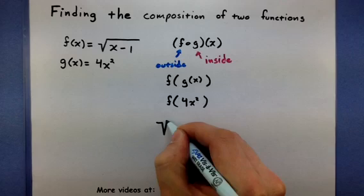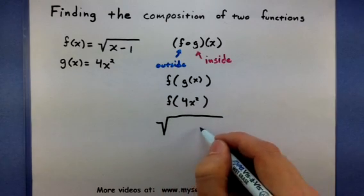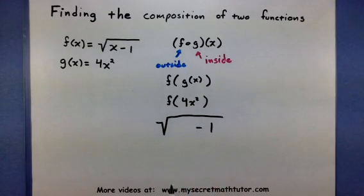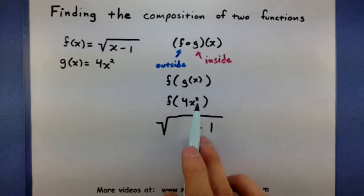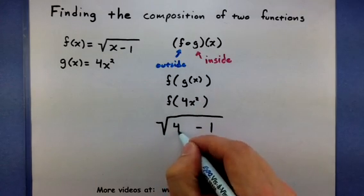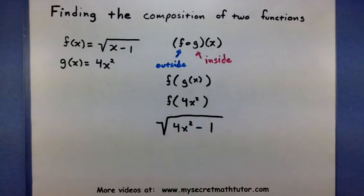f is normally the square root of x minus 1. But notice how I didn't write that x. That's because I'm going to put the 4x squared in there. There we go.